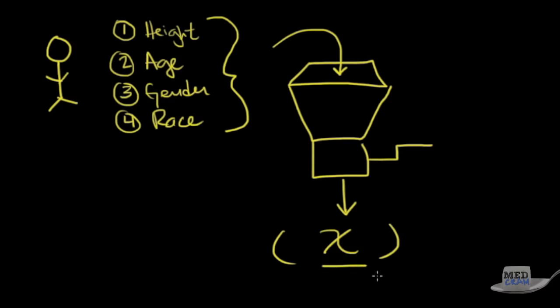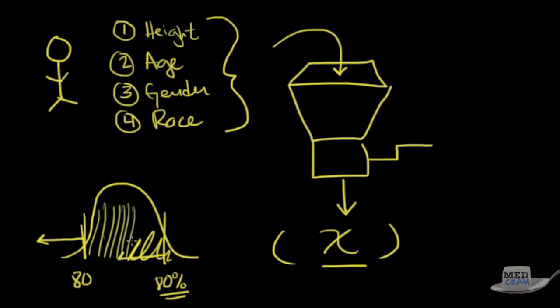It's that number that will tell you what the normal distribution should be. There's going to be a distribution of patients, and it will tell you what the 80% limit is. If you are below 80% of predicted of that value, that means you are abnormal.